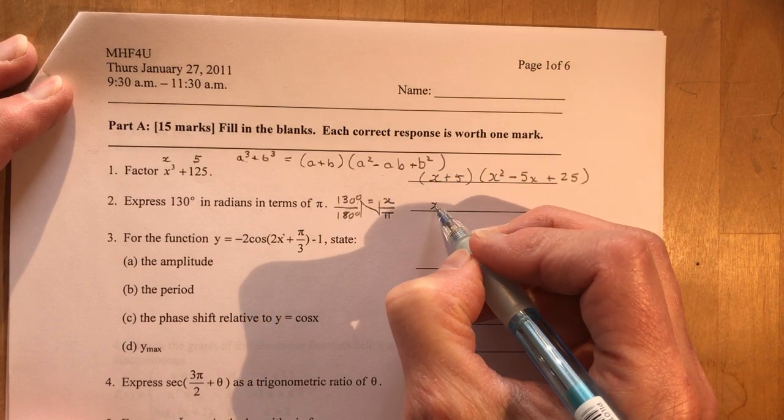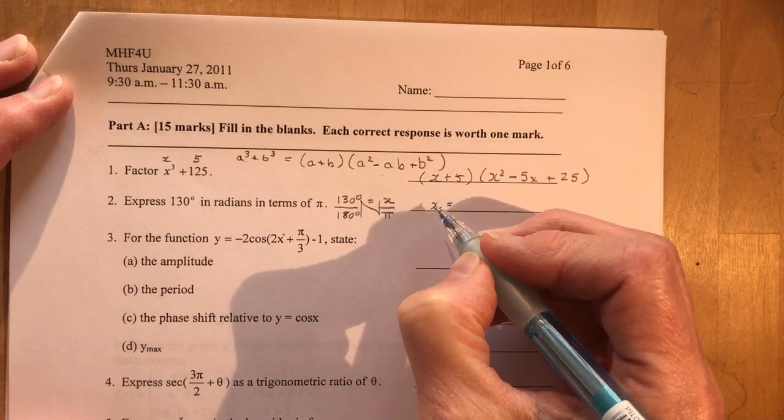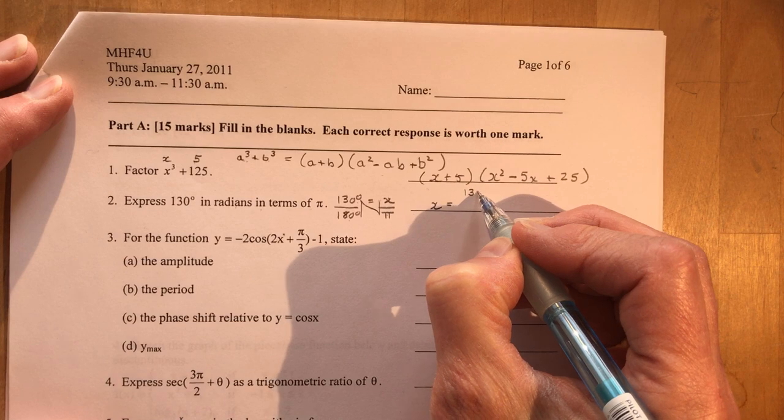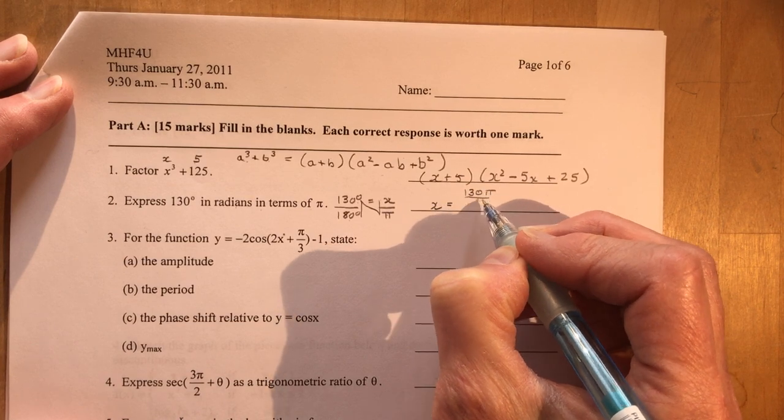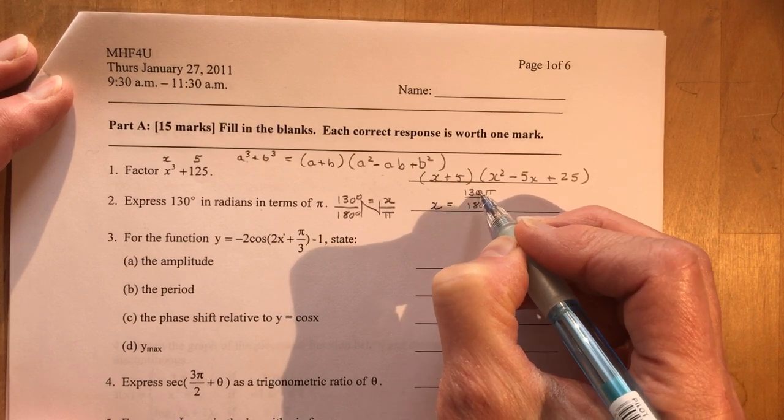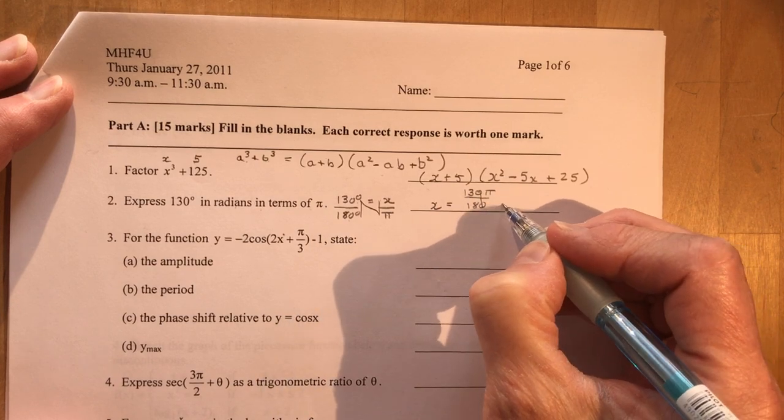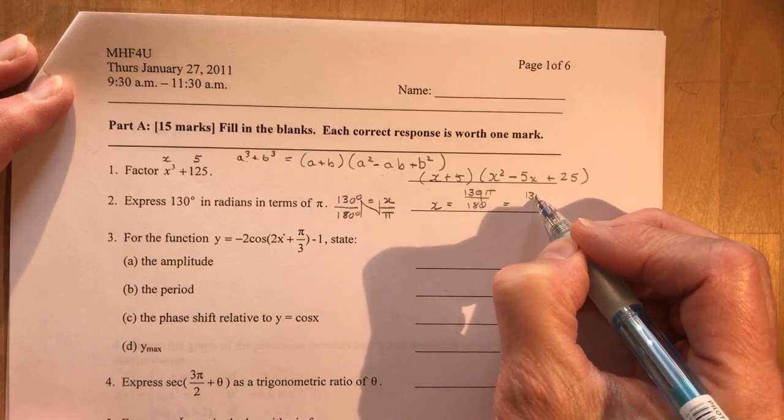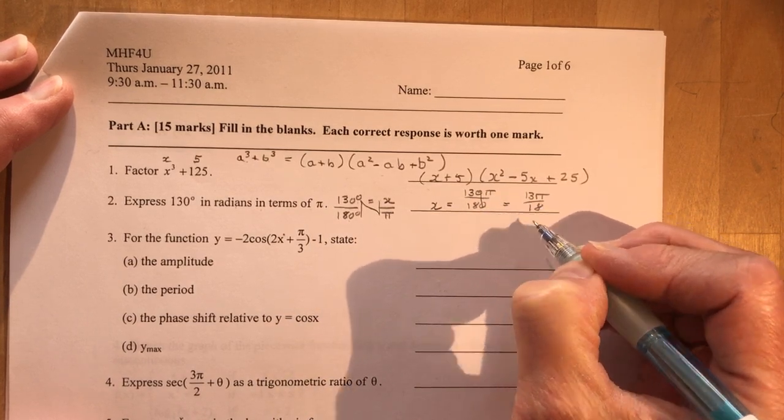So x equals I'm going to write it here and then I'm going to simplify it for you. So 130 pi over 180. And all you can cross out are those zeros. So that's 13 pi over 18. Two marks. Yay!